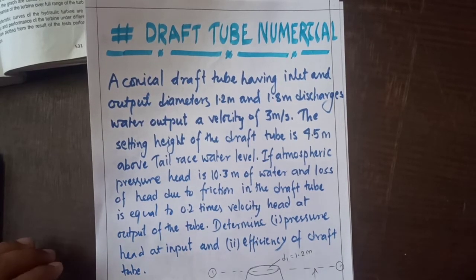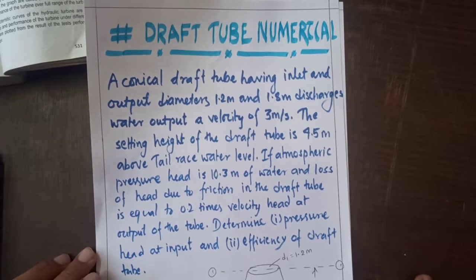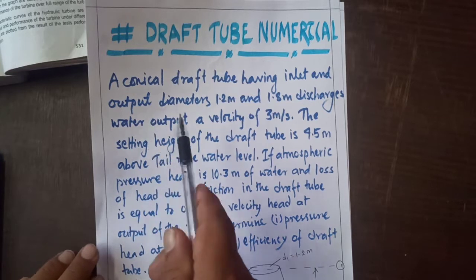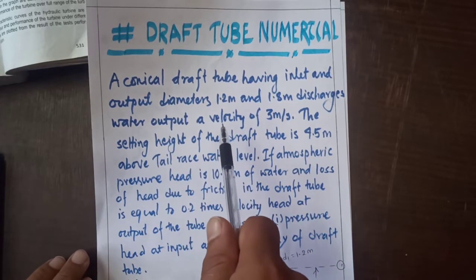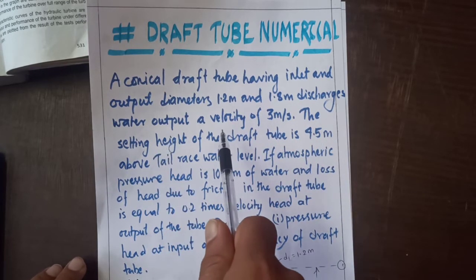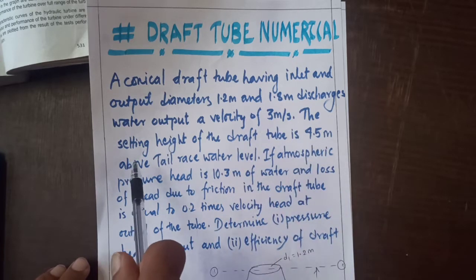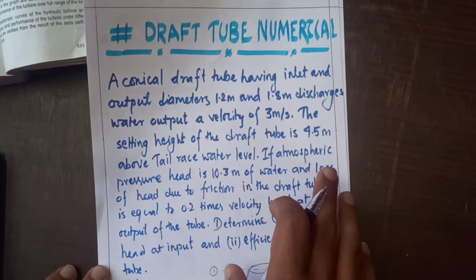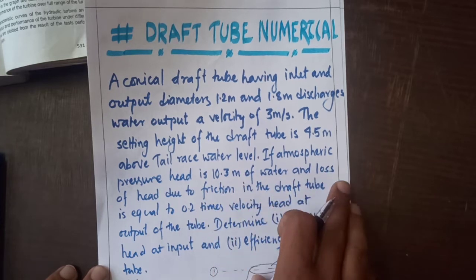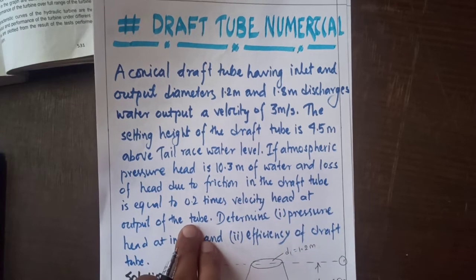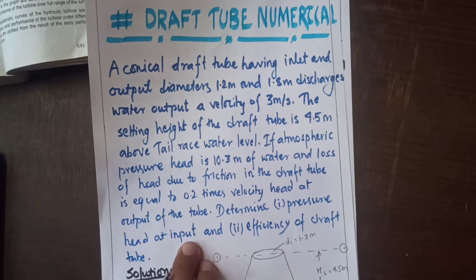Namaste! Now I am going to talk about the draft tube numerical. A conical draft tube having inlet and outlet diameters 1.2 meter and 1.8 meter discharges water output at velocity of 3 meter per second. The setting height of the draft tube is 4.5 meter above tailrace water level. If atmospheric pressure head is 10.3 meter of water and loss of head due to friction in the draft tube is equal to 0.2 times velocity head at output of the tube, determine pressure head at input and efficiency of draft tube.